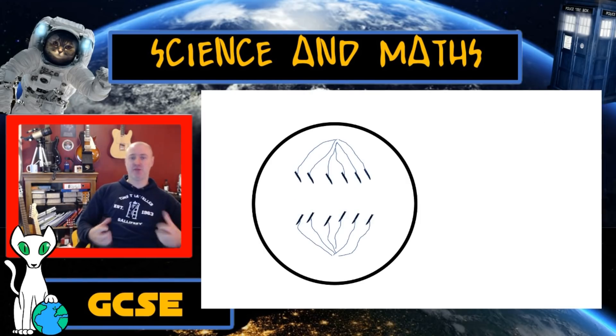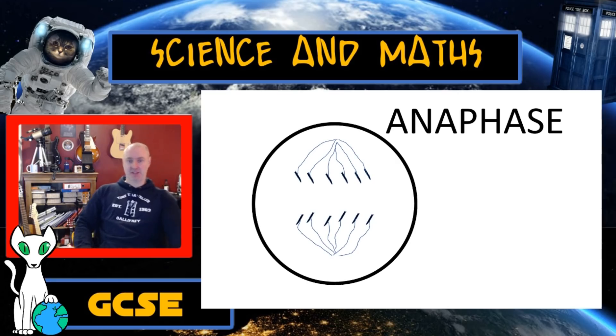Now, the next step is for these spindle fibers to pull those sister chromatids apart, just to snap them in two. And 46 chromosomes are now being pulled to the top of the cell, and 46 chromosomes are now being pulled to the bottom of the cell. Once we're in this stage, we call that anaphase.